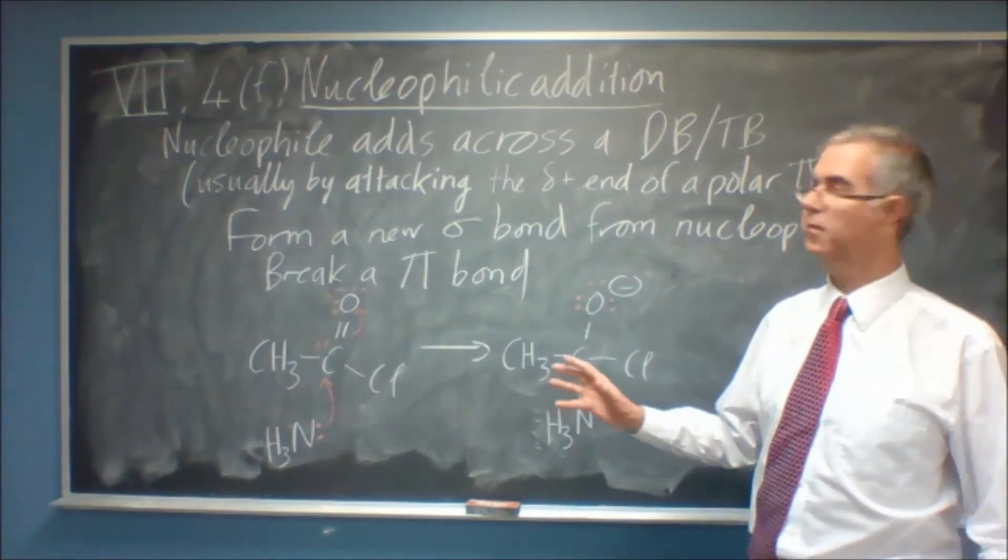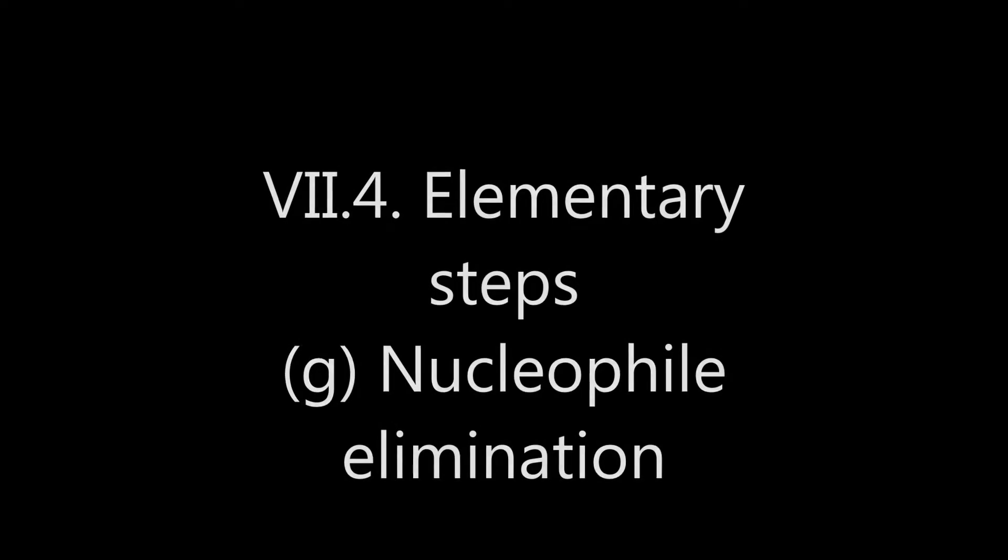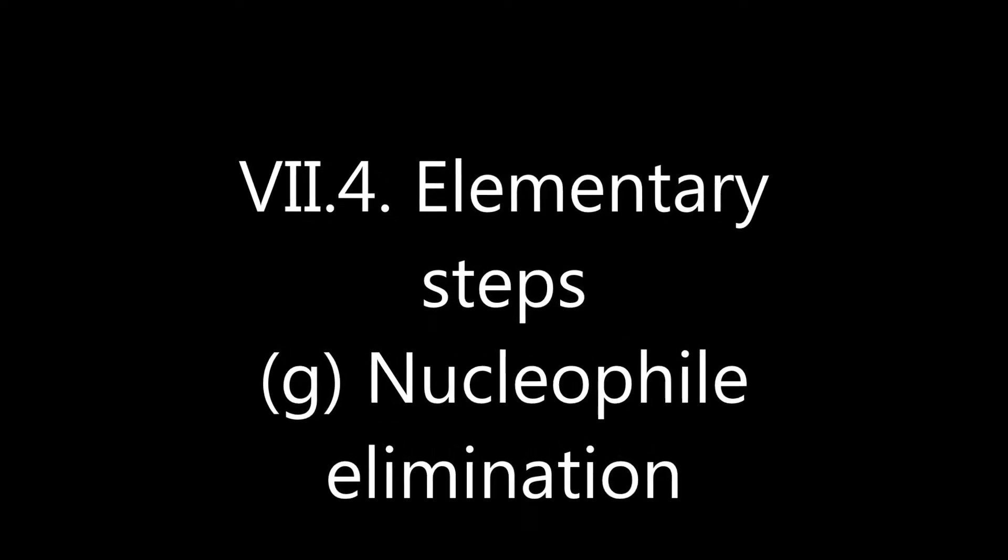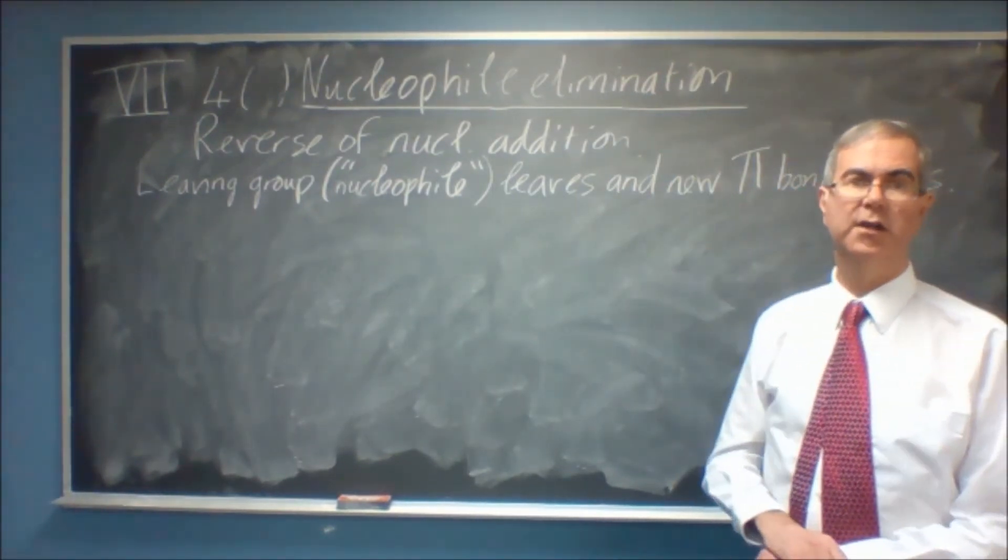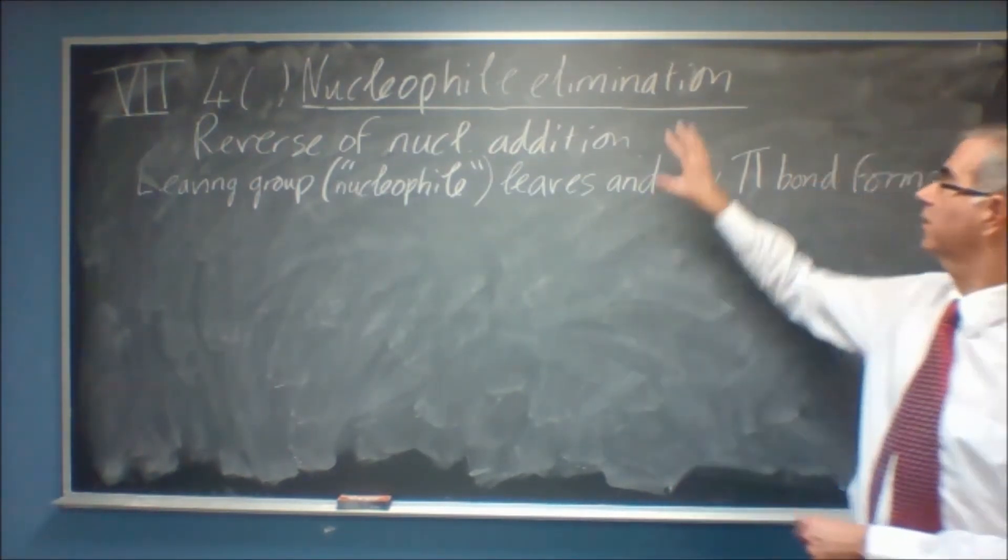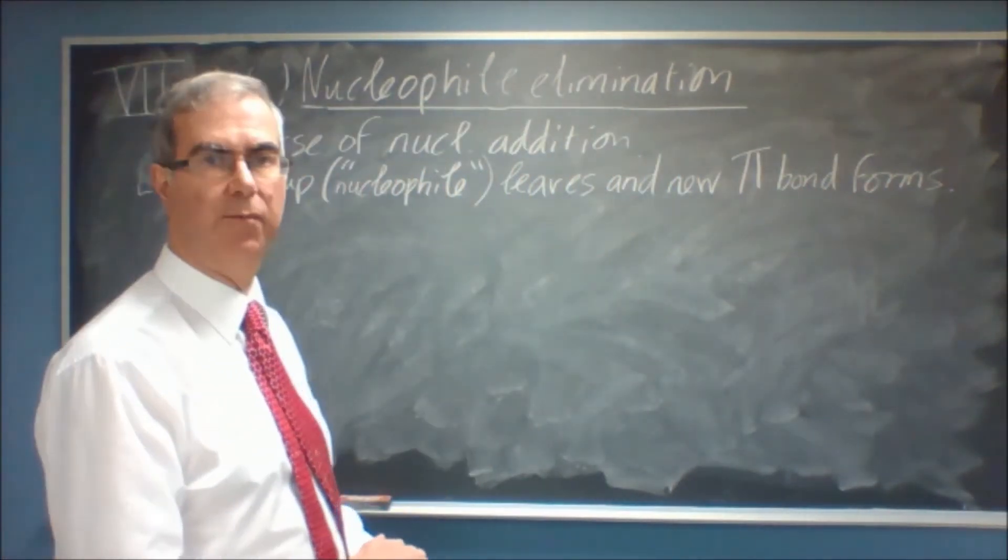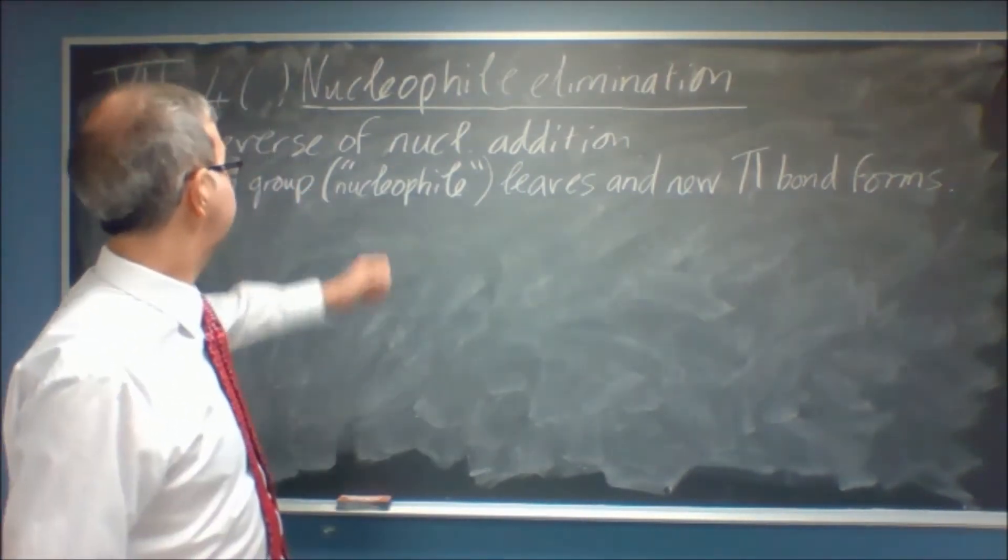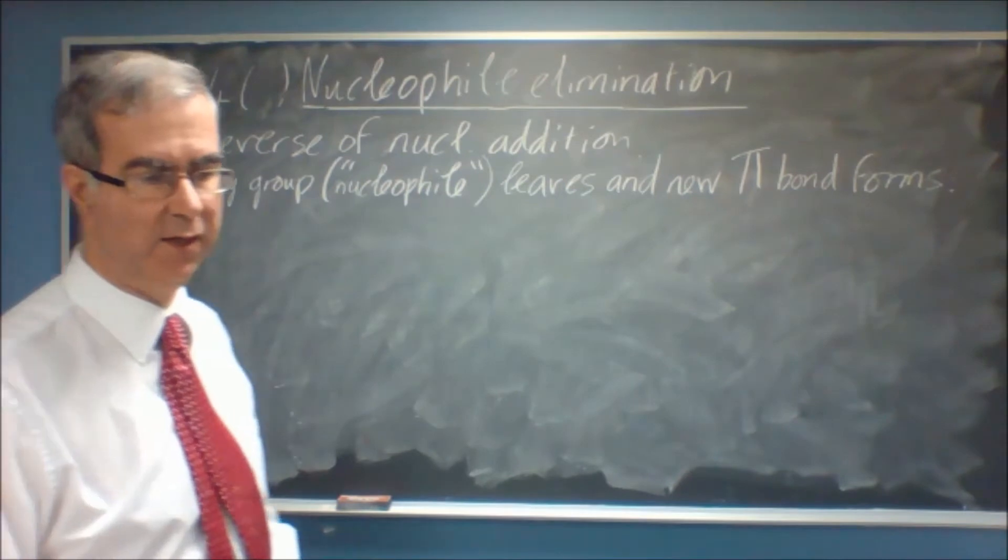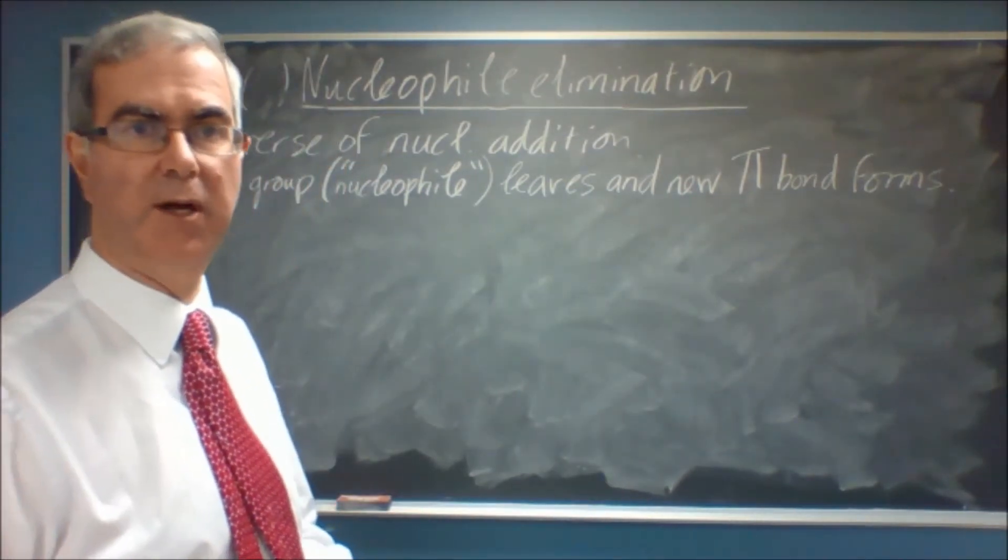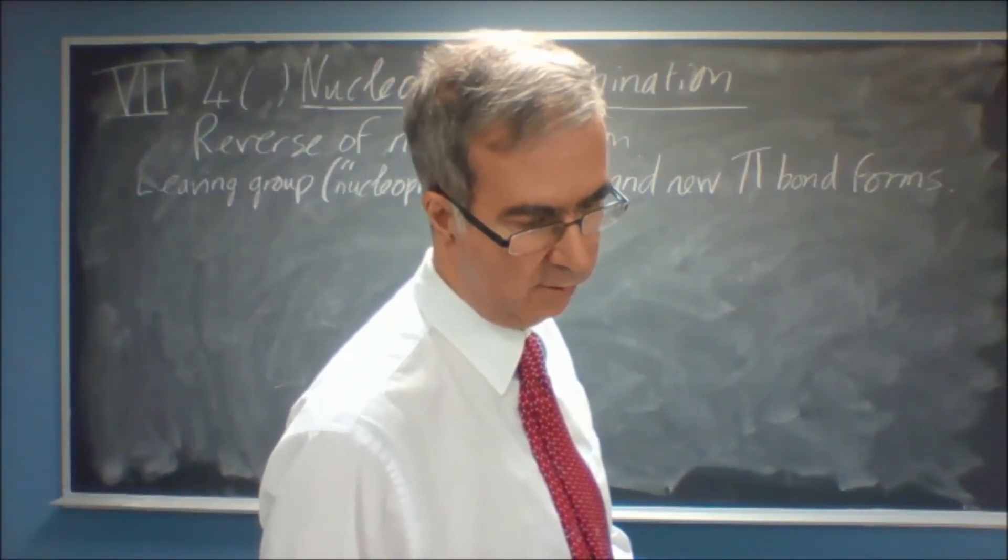And the opposite process, you can imagine, is nucleophilic elimination. So the opposite of nucleophilic addition is called nucleophilic elimination. And in this process, since it's elimination, you're going to form a new pi bond. So if we only have a single bond to begin with, we'll end up with a double bond. And the way it does that is we eject some kind of leaving group. And then that gives room for the pi bond to form. So let's show an example of that.